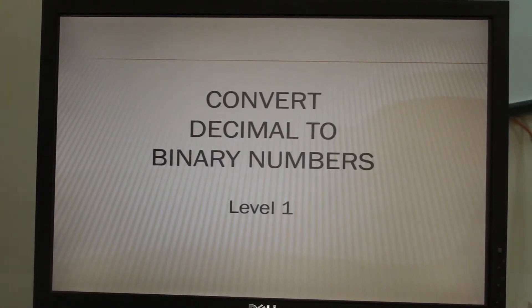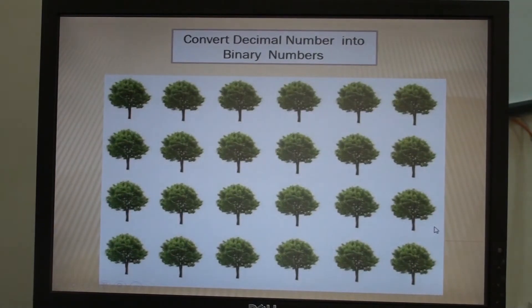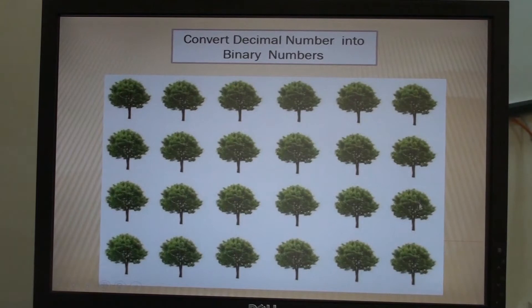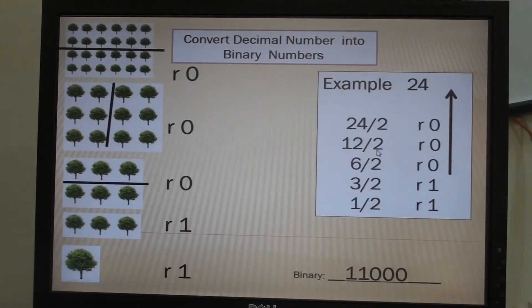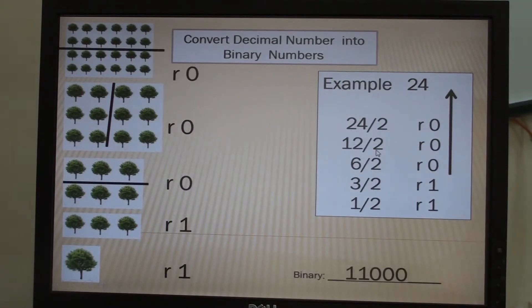Let us start the lesson: convert decimal to binary numbers. For example, there are items here on the board. How many trees do we have? One, two, three, four — there are four rows. One, two, three, four, five, six — there are six columns. Four times six is therefore 24.